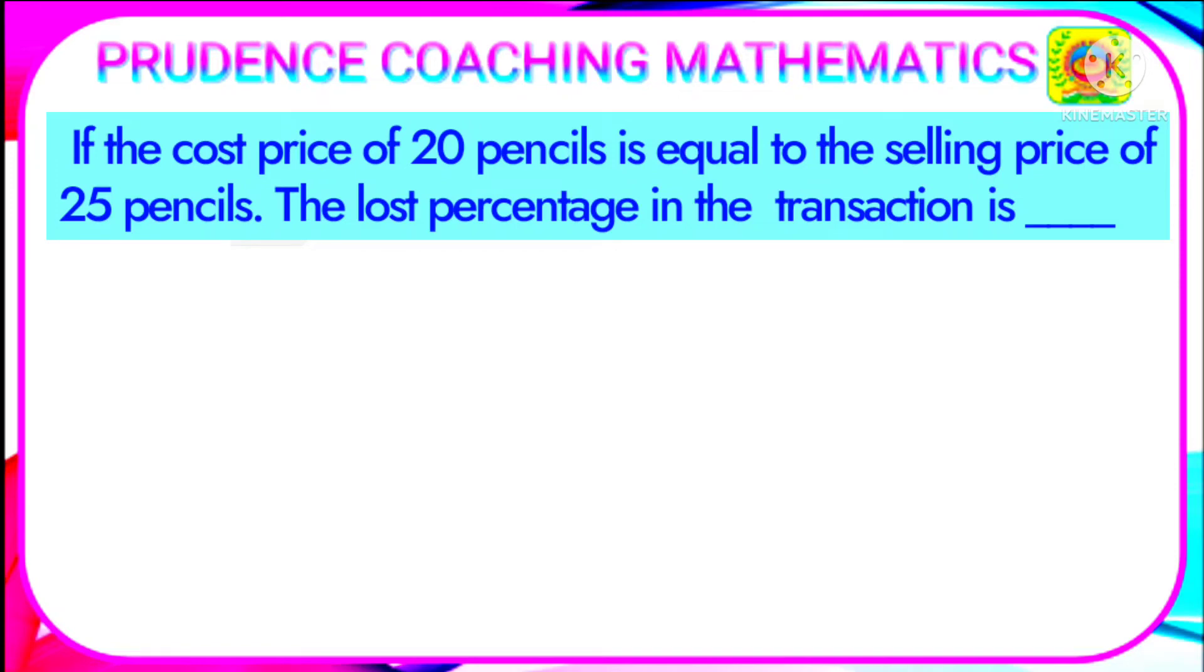According to the question, the cost price of 20 pencils equals the selling price of 25 pencils. If we assume the cost price to be CP, then 20 × CP equals 25 × SP, where SP is the selling price.